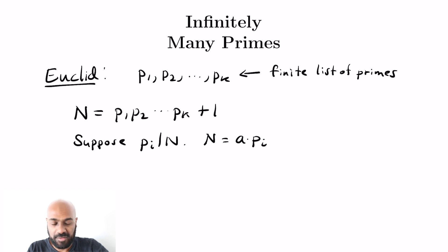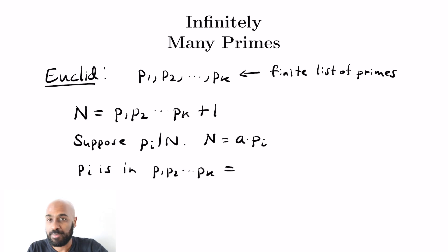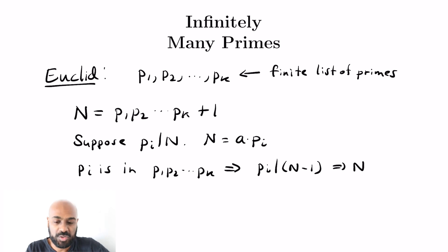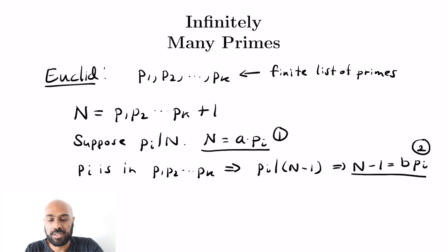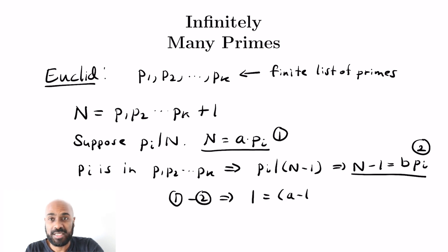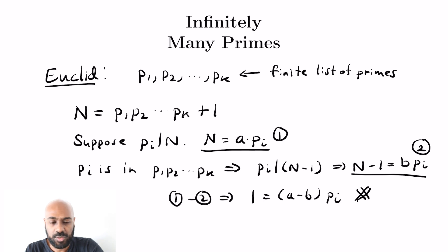Now the thing is P_i itself appears in the list P1 through Pk. So since P_i is in that list, P_i has to divide that product — P_i is actually a factor of capital N minus 1. So capital N minus 1 is some number, say B times P_i. That's a problem for N and the number right before it to both be multiples of the same number. If we took the first equation and subtracted the second from it, we get that 1 equals (A minus B) times the prime P_i. So the number one would be a multiple of this prime, which doesn't make any sense.